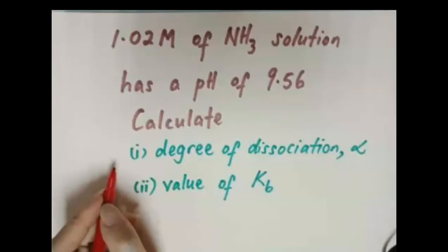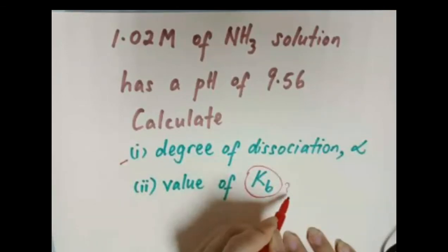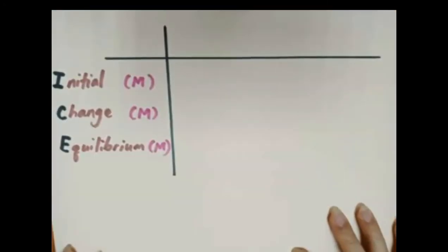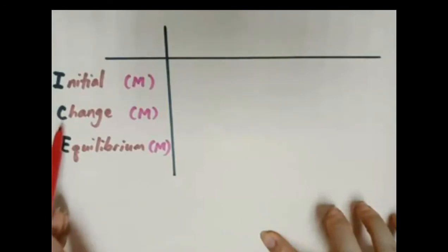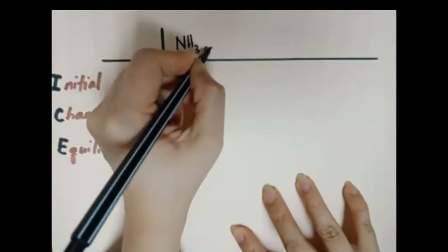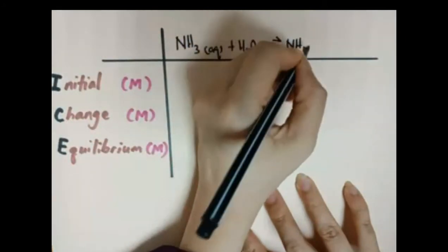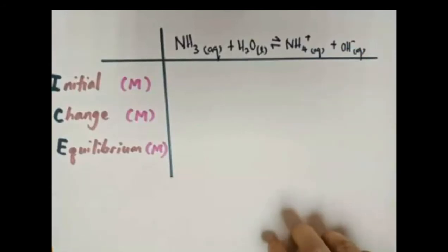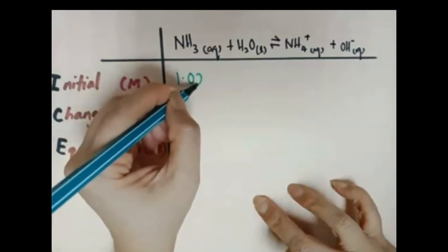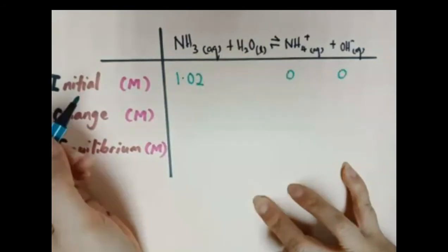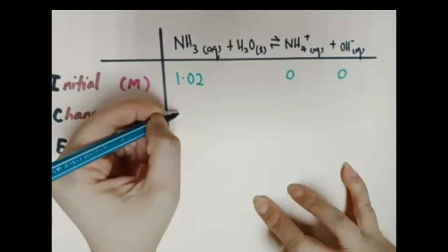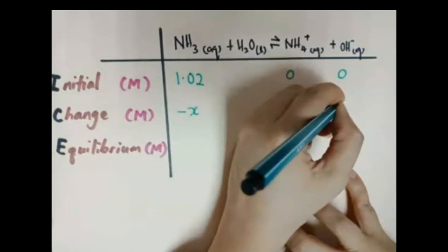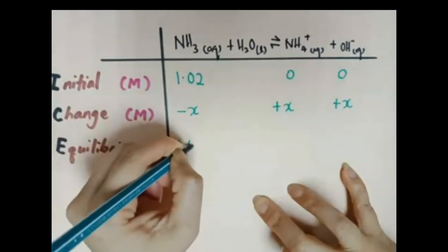Next we proceed with finding the value of Kb. We need to prepare the ICE table using concentration. First, write the dissociation equation for ammonia — dissociation of ammonia solution will produce NH4⁺ and OH⁻ ions. Write the initial concentration of ammonia as 1.02, as given in the question.